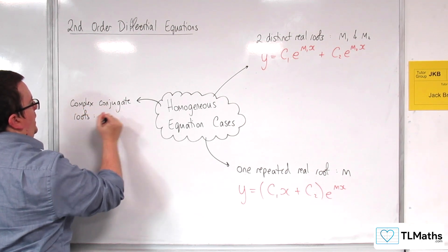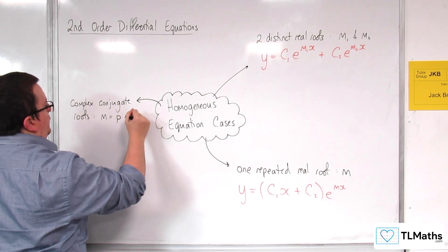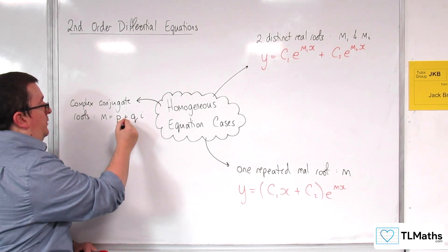Let's call it m is equal to, we could have p plus qi, for example, or p plus and minus qi, rather.